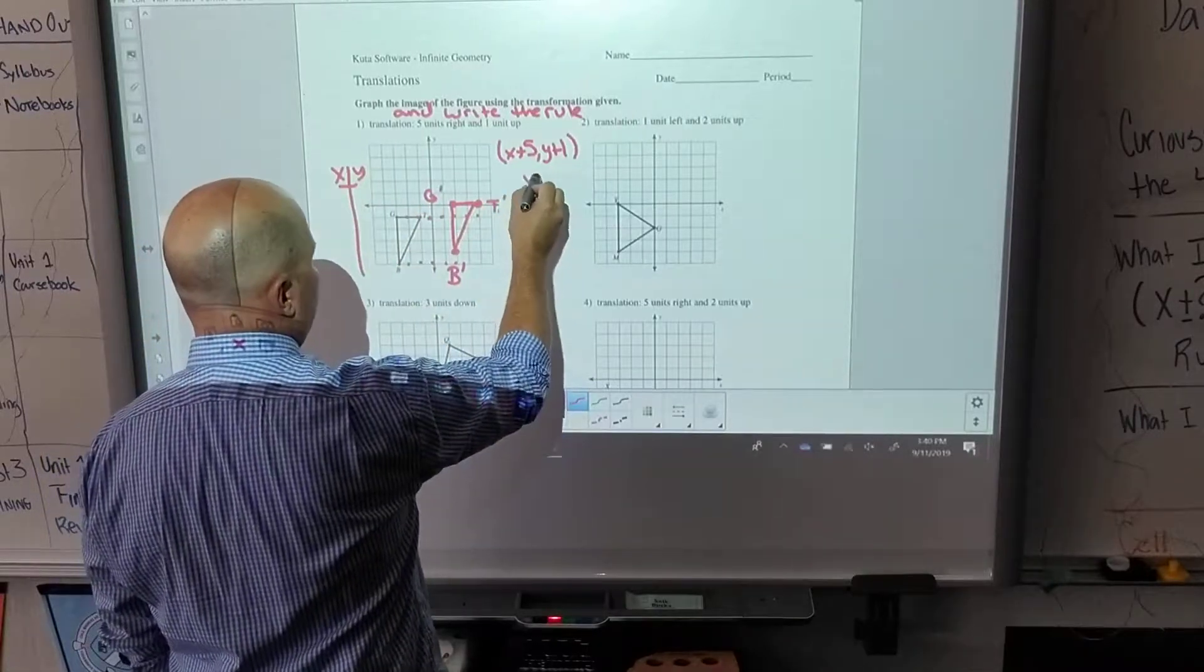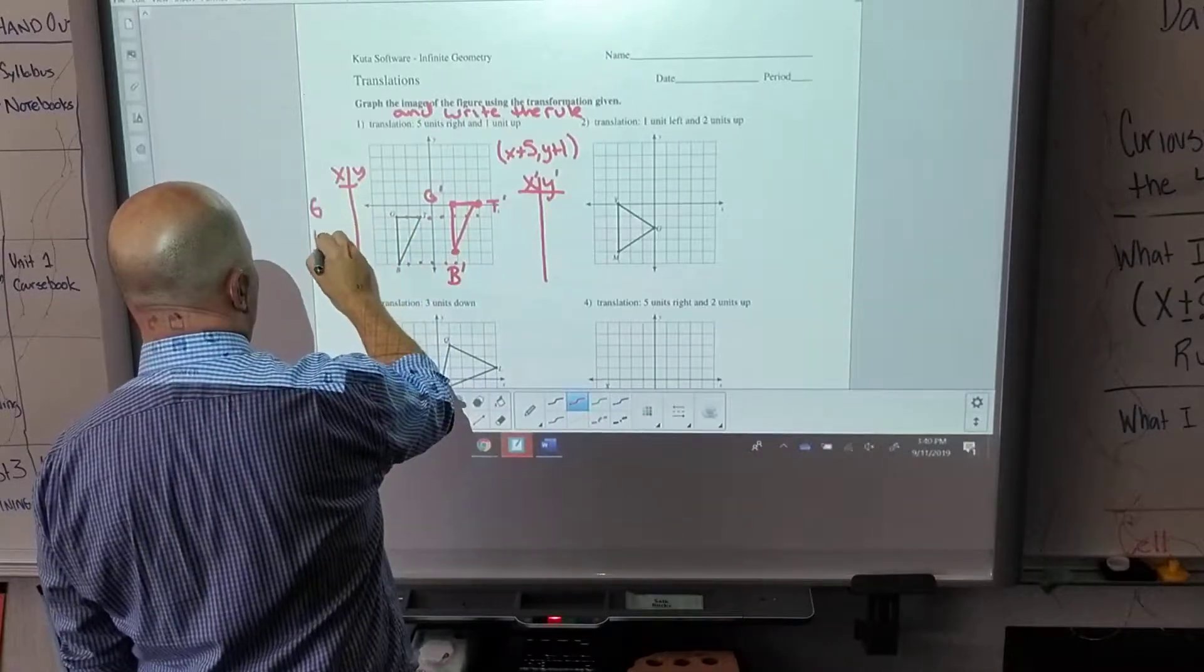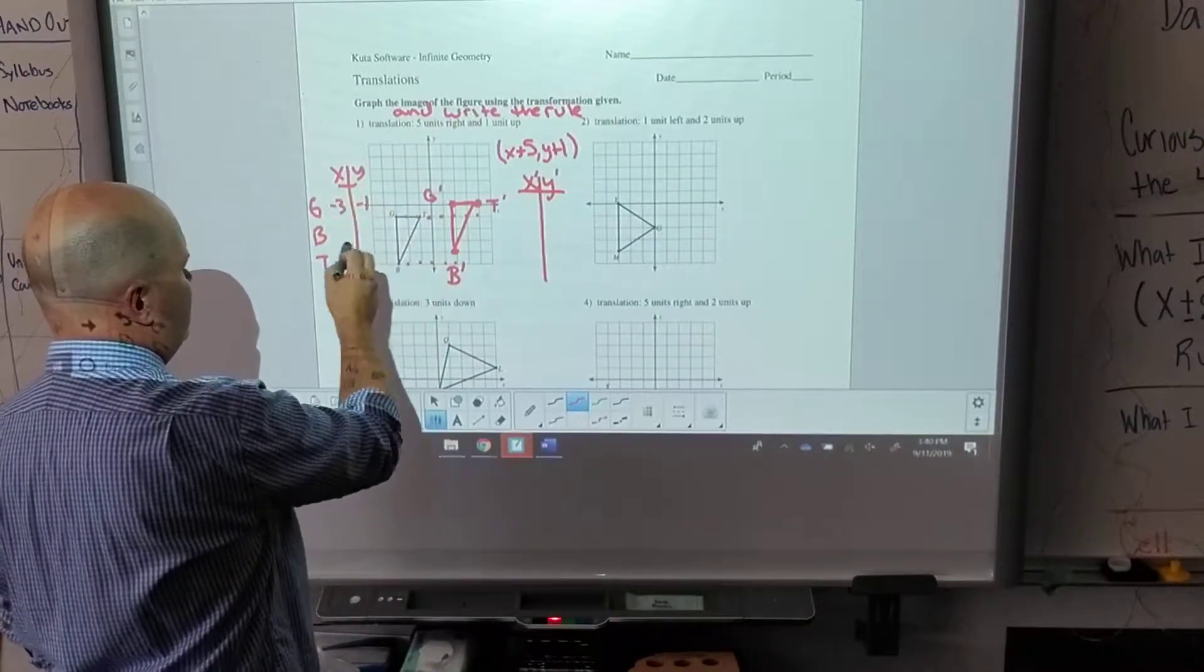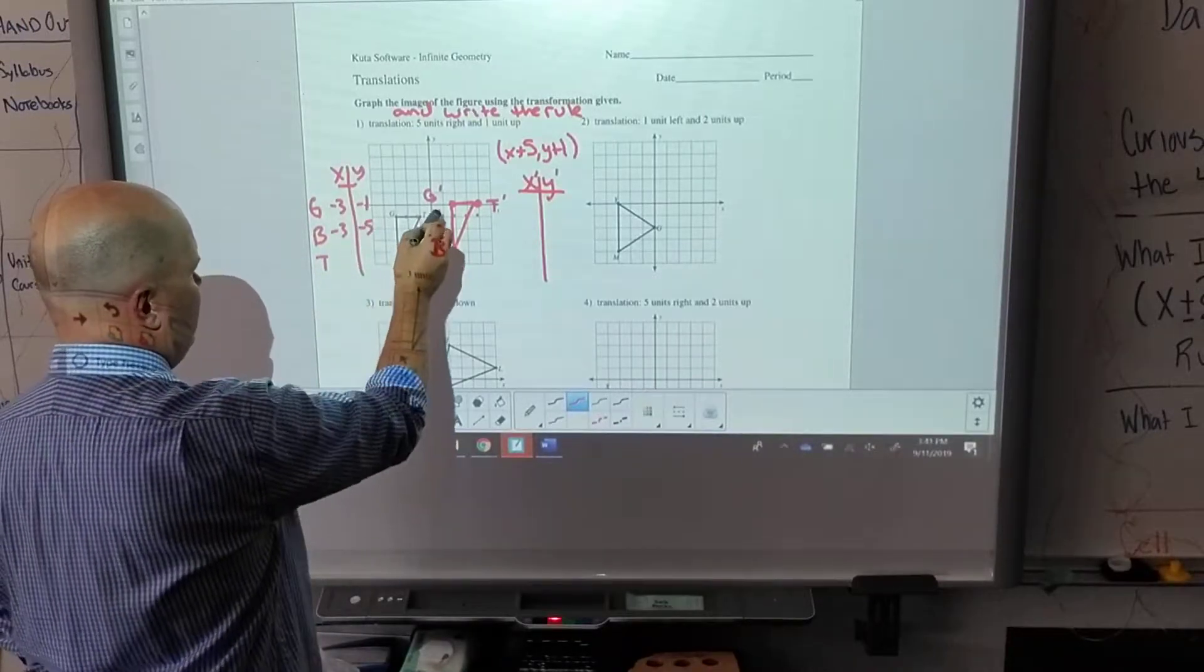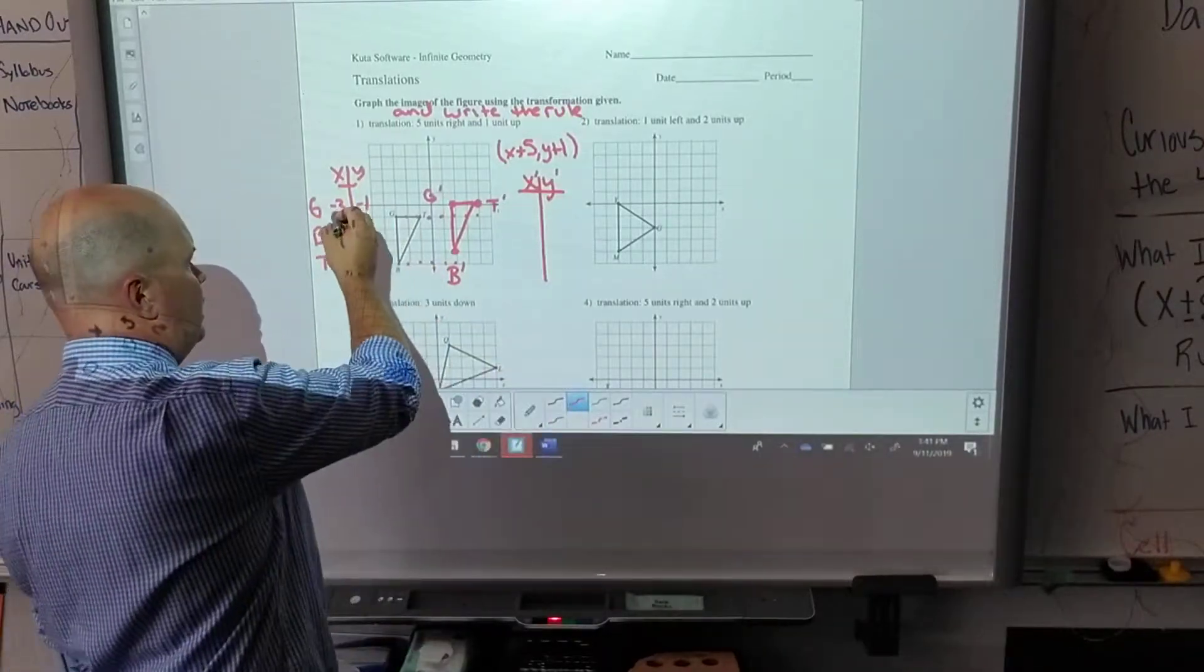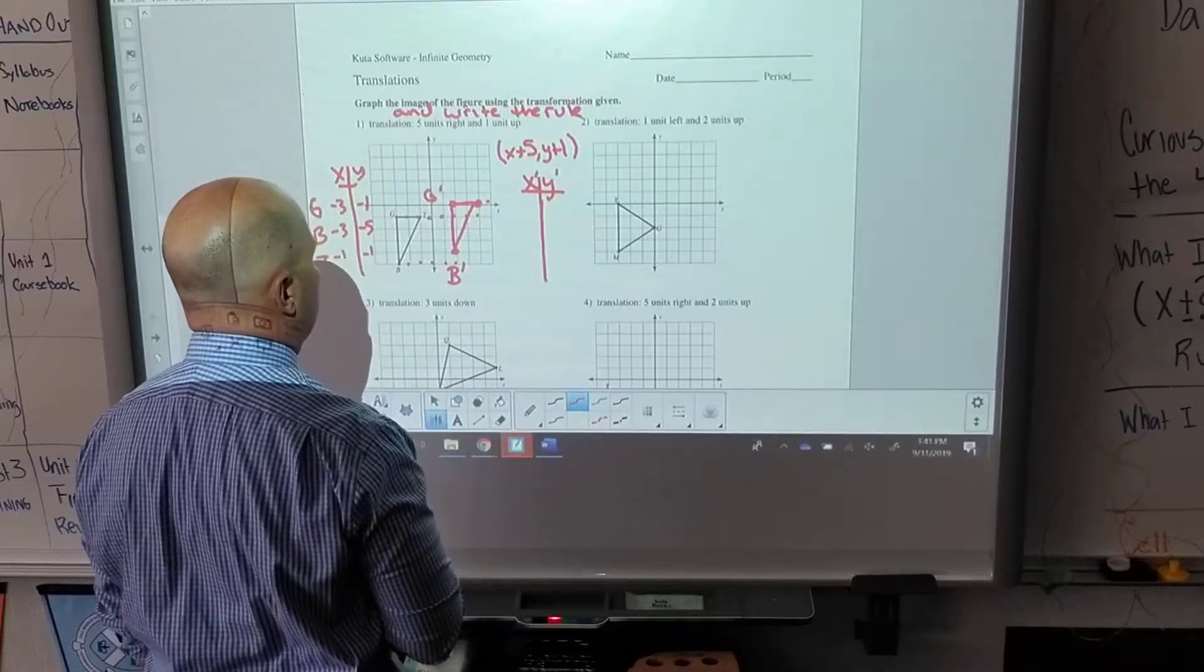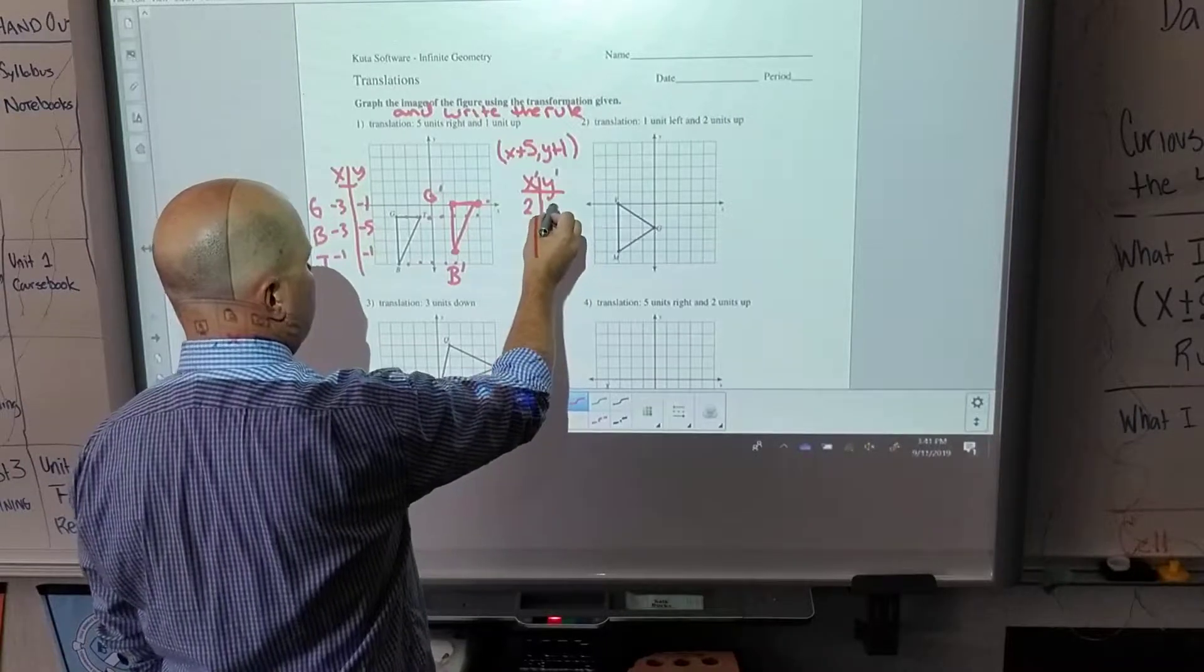So you'd have your x, y, and then your x prime, y prime. Do your G, B, T. So G was at negative three, negative one. B was at negative three, negative five. And T was at negative one, negative one. And then after we put the rules, you're just going to take that negative three plus five - that would be two - and then negative one plus one, so two, zero.